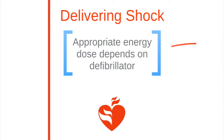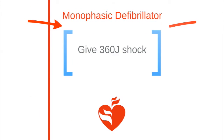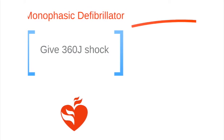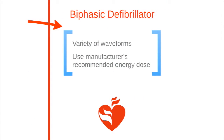When delivering a shock, determine energy dose according to the type of defibrillator. With a monophasic defibrillator, deliver a single 360 joule shock. If subsequent shocks are needed, continue with the same energy dose. A biphasic defibrillator has a variety of waveforms — determine the appropriate shock dosage according to the manufacturer's recommendation.